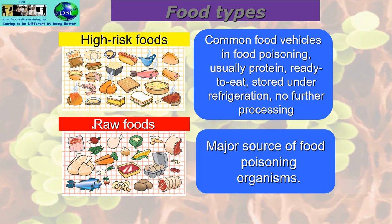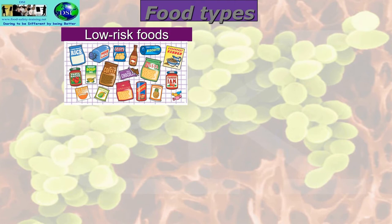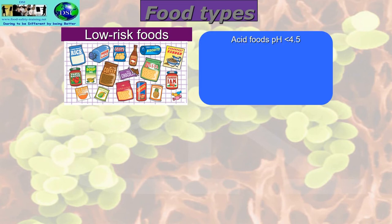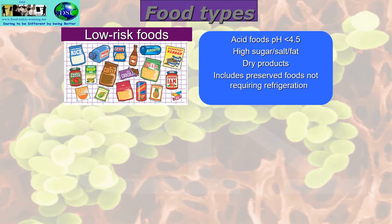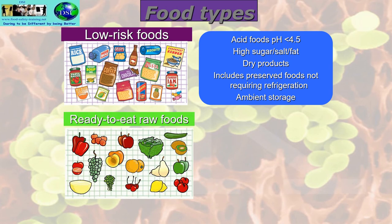Raw foods are the major source of food poisoning organisms. It is when they are transferred to high-risk food by cross-contamination that they become a problem. Bacteria don't particularly like raw food — there aren't enough nutrients. They prefer cooked food, where they'll multiply rapidly given the right conditions. Low-risk foods have never been implicated in food poisoning outbreaks, normally because they are acid foods with a pH below 4.5, have a high sugar, salt, or fat content, or are dry products.